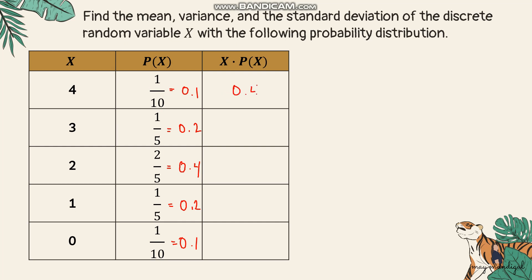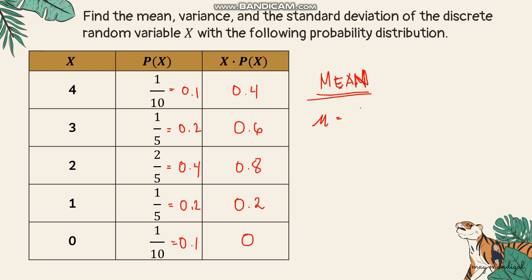Computing x·p(x): 4 × 0.1 = 0.4; 3 × 0.2 = 0.6; 2 × 0.4 = 0.8; 1 × 0.2 = 0.2; 0 × 0.1 = 0. To solve for the mean using mu = summation of x·p(x), we add: 0.4 + 0.6 + 0.8 + 0.2 + 0 = 2. Therefore, the mean of our discrete probability distribution is 2.